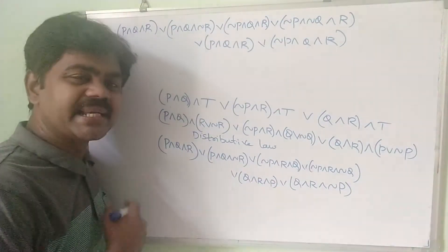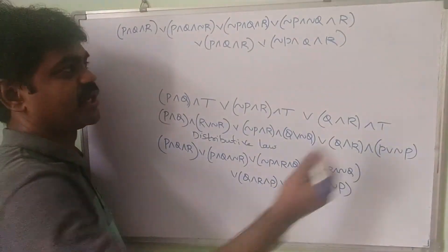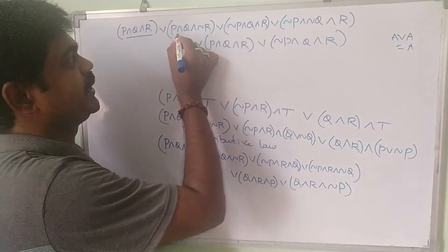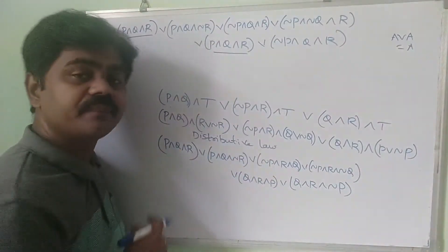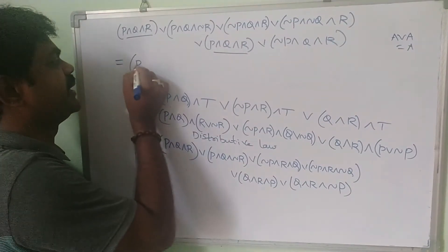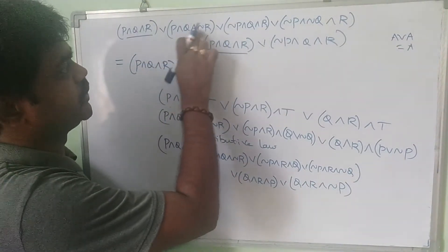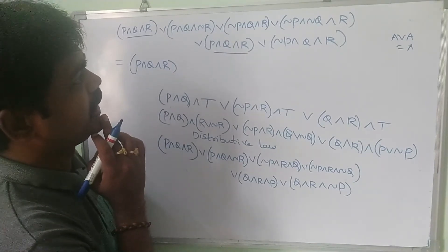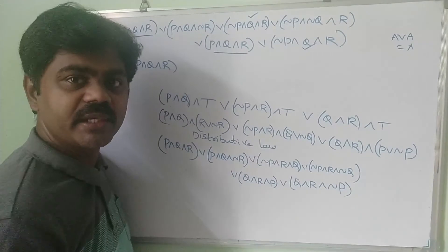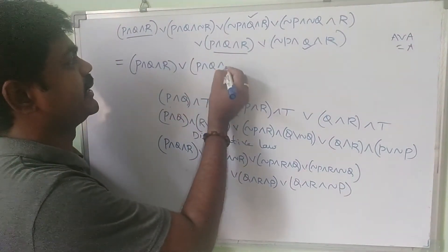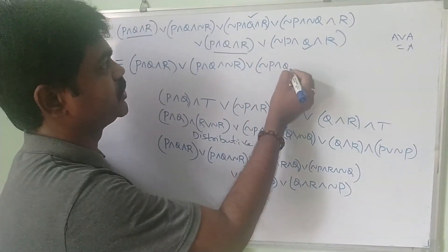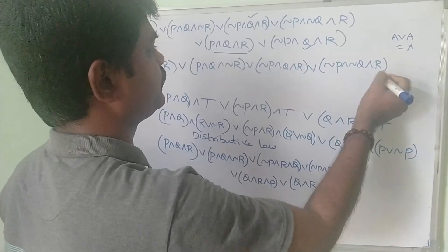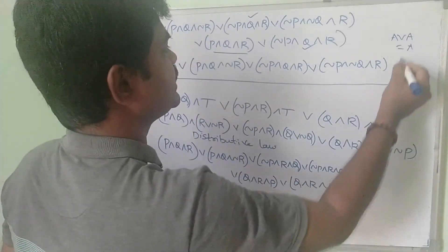Now checking for repetitions: p AND q AND r appears more than once, and negation p AND q AND r also repeats. Since a OR a equals a, we keep each only once. The final PDNF is: p AND q AND r OR p AND q AND negation r OR negation p AND q AND r OR negation p AND negation q AND r. These are the minterms forming our PDNF.